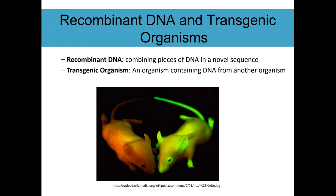If you're creating a transgenic organism, this is just an organism that has genes from a different organism. Here you've got mice that look like they're glowing in the dark — this is because a fluorescent protein that jellyfish actually has has been added to them. It's not just to make them spooky; if they're trying to add a different gene, they also add the glowing gene, and if the glowing gene is working, they can assume the other gene got in too. It's a way of testing that their experiment worked.